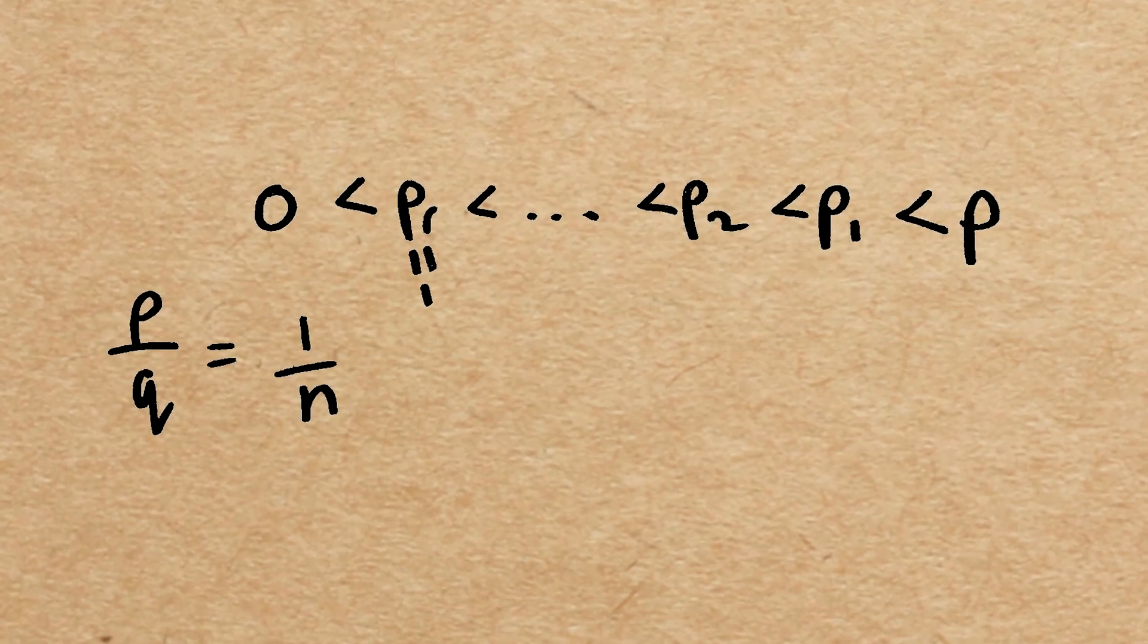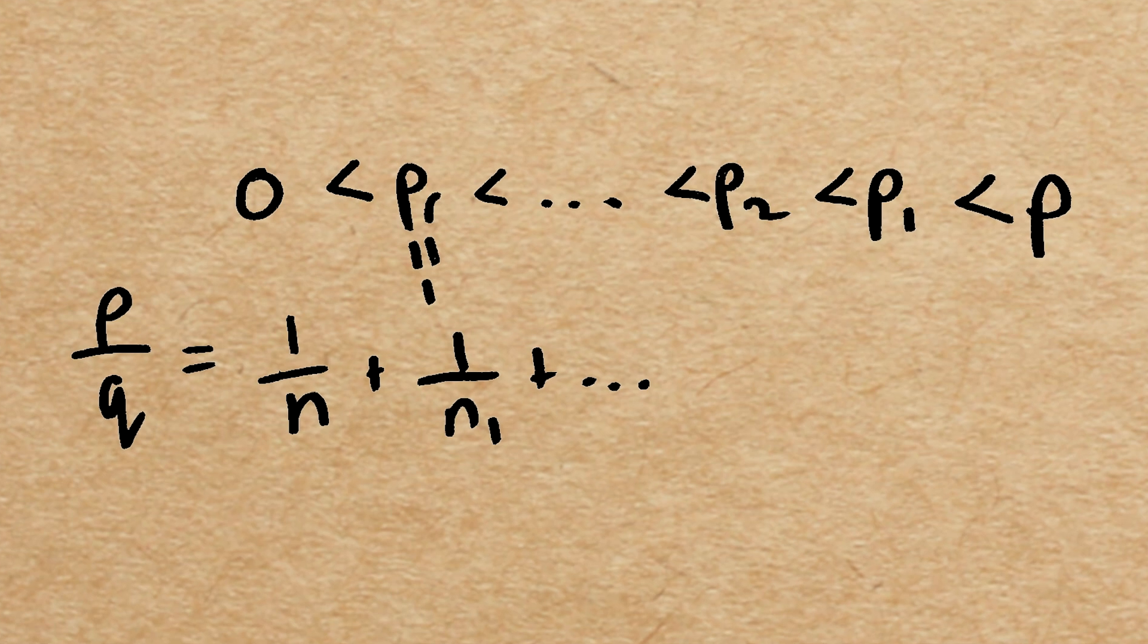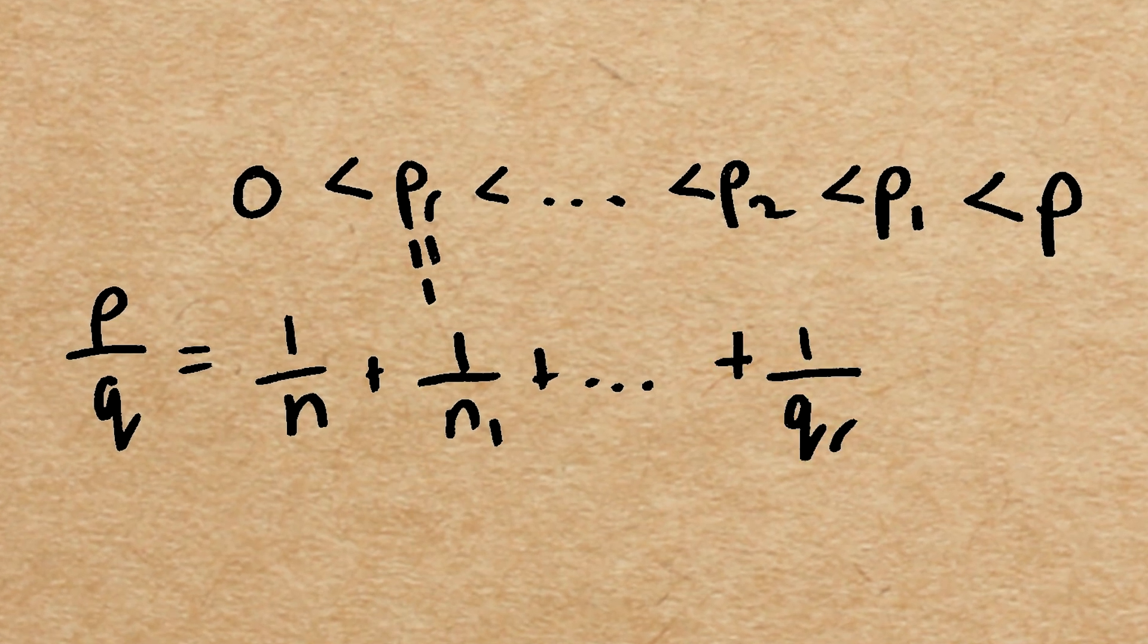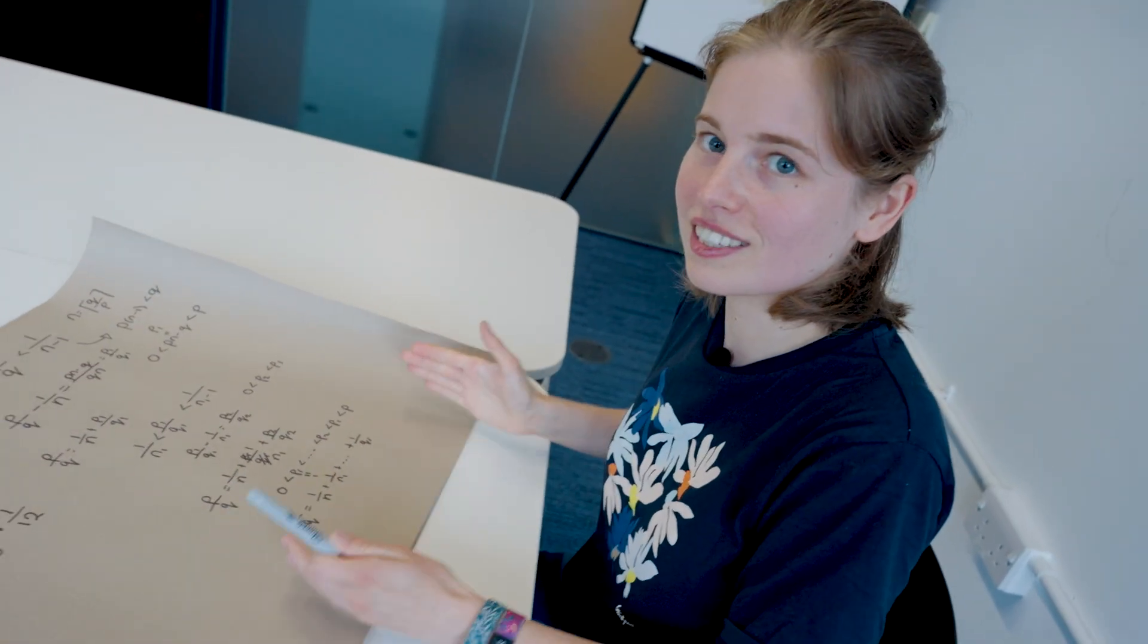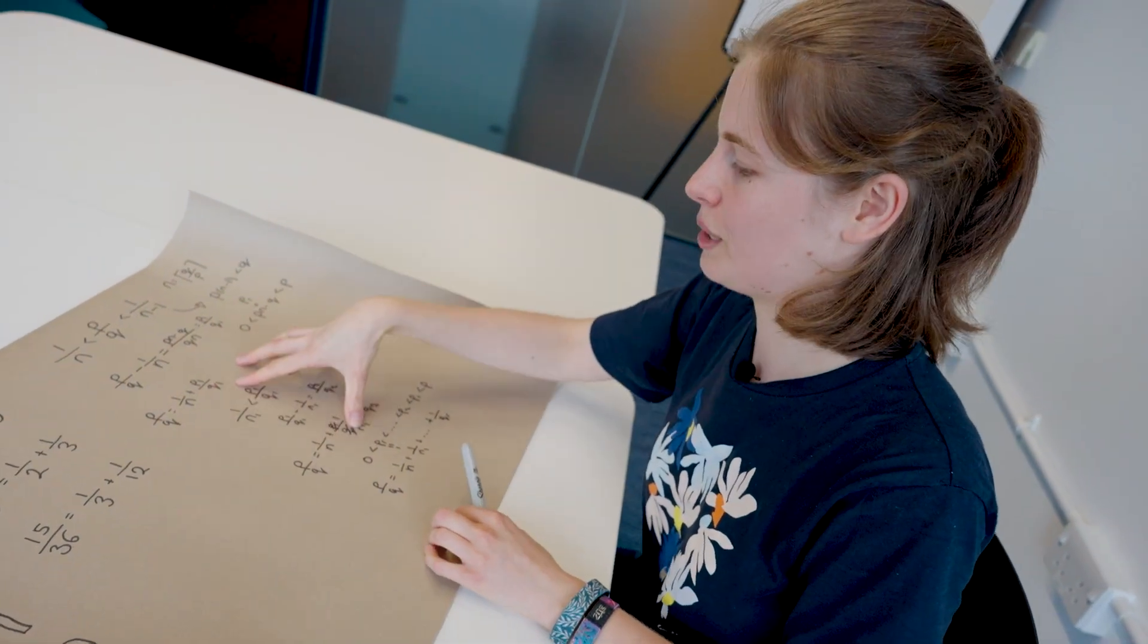So we're going to have p over q is one over n plus one over n1 plus plus one over then qr. And we're going to be done. So eventually, this process does stop. So this greedy algorithm means that there is always an Egyptian fraction.